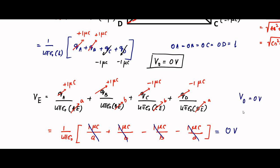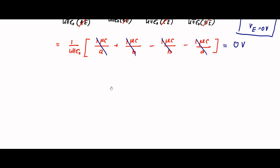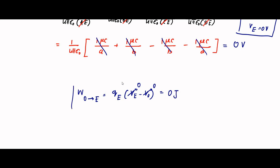Here also the electric potential at point E due to these 4 charges is equal to 0 volt. So V_O is equal to 0 volt and V_E is equal to 0 volt. Therefore, the work done in taking the electron from O to E is equal to Q_E into V_E minus V_O — both are 0 — so it will be equal to 0 joule. No work is done in taking an electron from O to E.